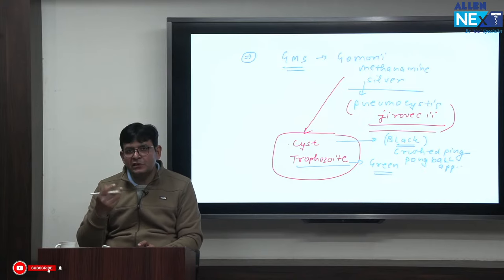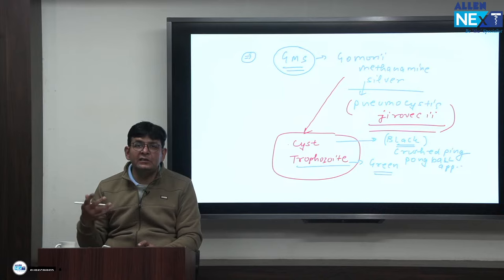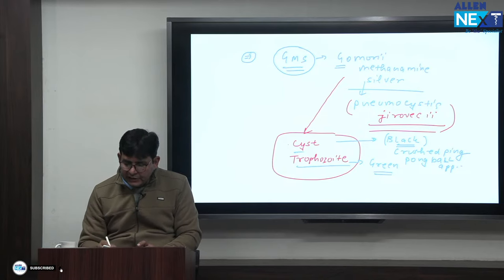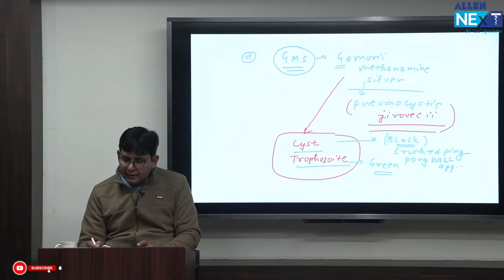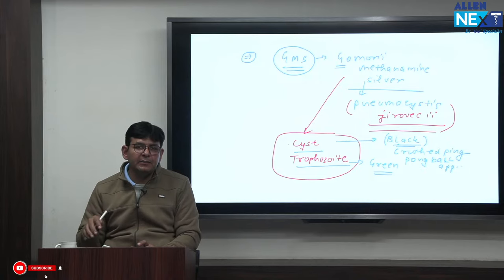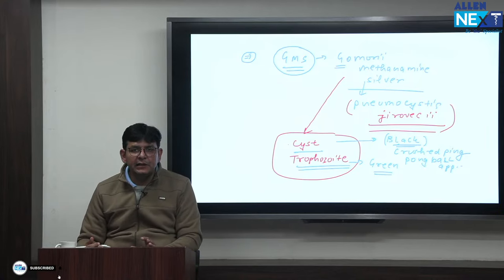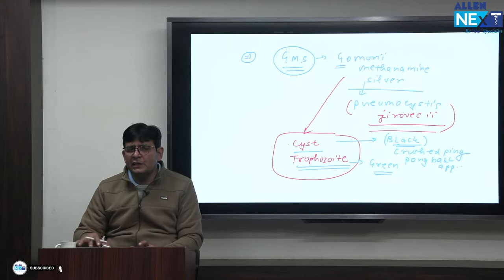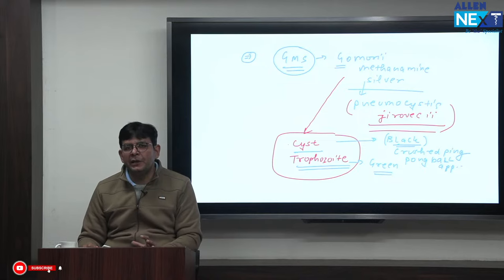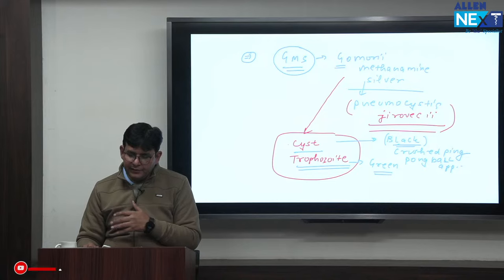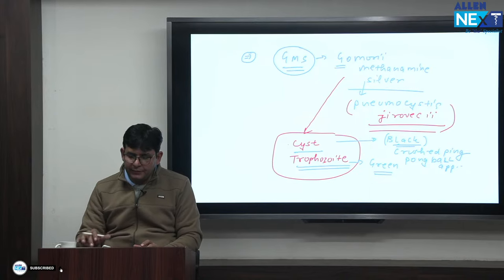Pneumocystis jirovecii cannot be cultured on SDA. The cysts in GMS stain appear black because they contain glycogen, and they show a crushed ping-pong ball appearance. Trophozoites appear green. The drug of choice for Pneumocystis pneumonia is cotrimoxazole.